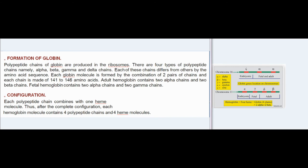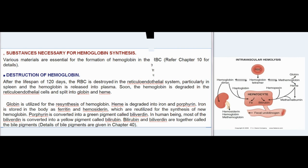Formation of globin: polypeptide chains of globin are produced in ribosomes. There are four types: alpha, beta, gamma, and delta chains. Each chain differs from others by amino acid sequence. Each globin molecule is formed by combination of two pairs of chains, and each chain is made of 141 to 146 amino acids. Adult hemoglobin contains two alpha and two beta chains; fetal hemoglobin contains two alpha and two gamma chains. Each polypeptide chain combines with one heme molecule, so each complete hemoglobin molecule contains four polypeptide chains and four heme molecules.